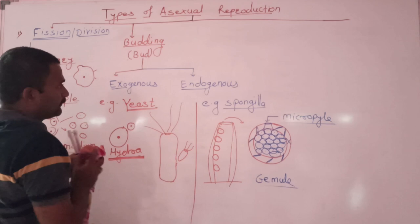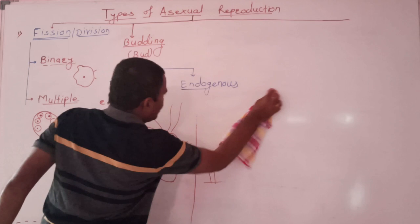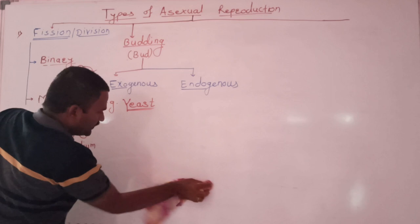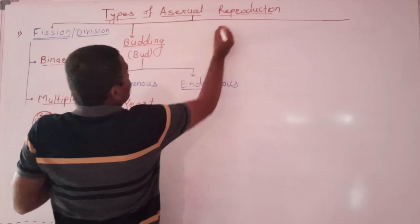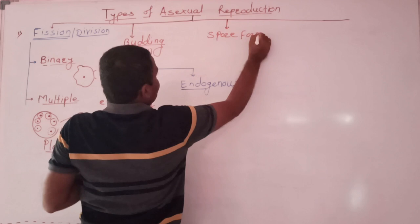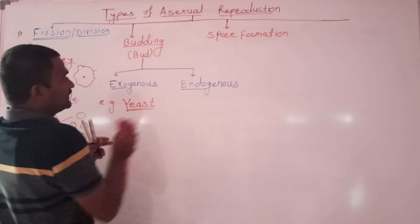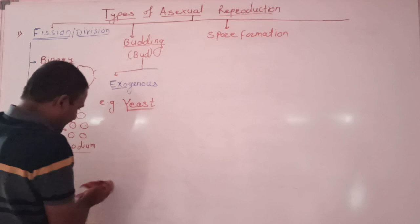Then one more type of asexual reproduction, this type is called sporulation or spore formation. Asexual reproduction by forming spores. Asexual reproduction by spore formation. But there are two types of spores.